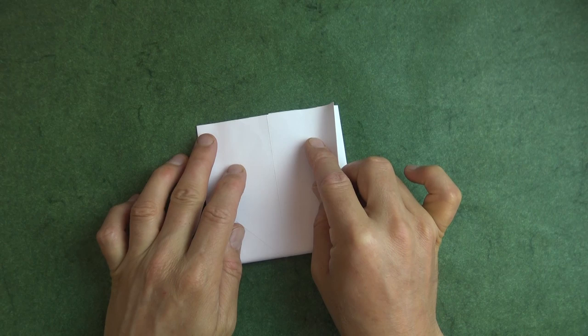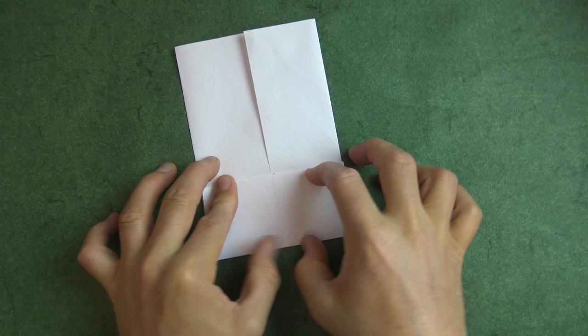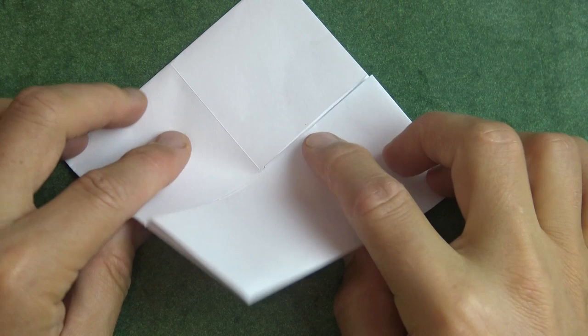Now rotate and fold in half and unfold, and pull the bottom edge to the crease. And rotate and repeat on this side. Now fold in half diagonally.